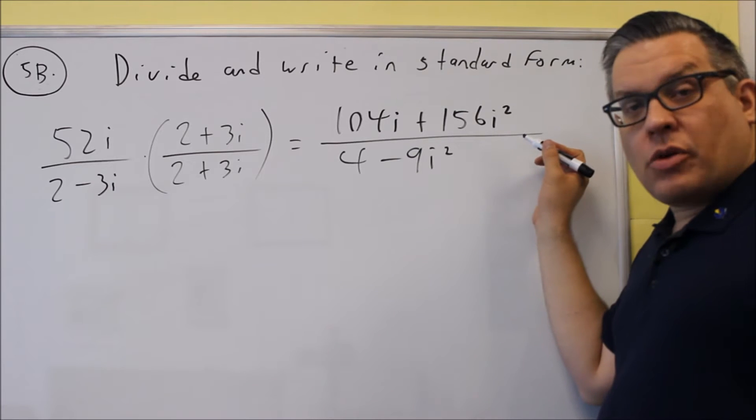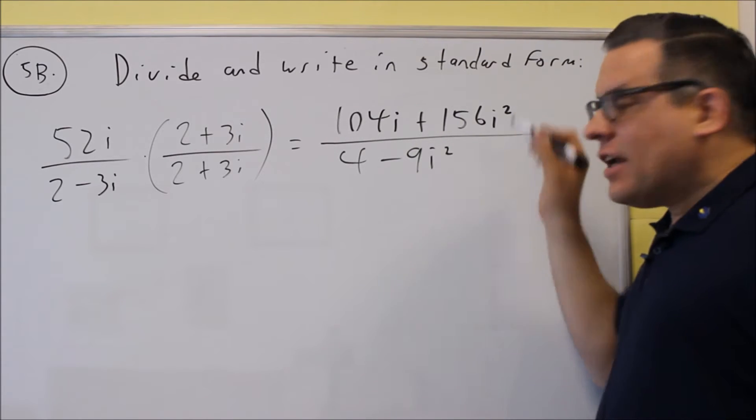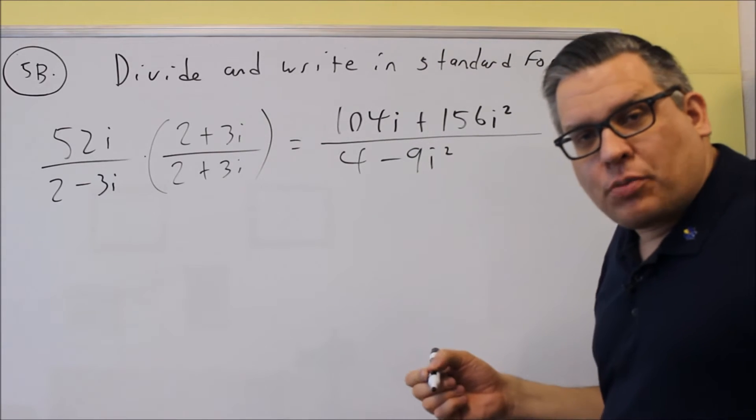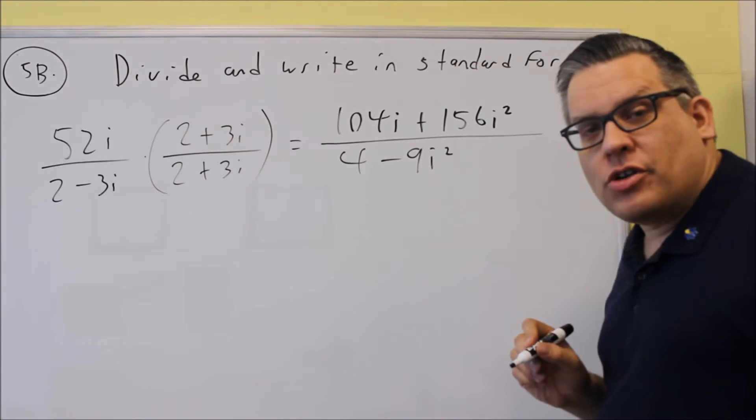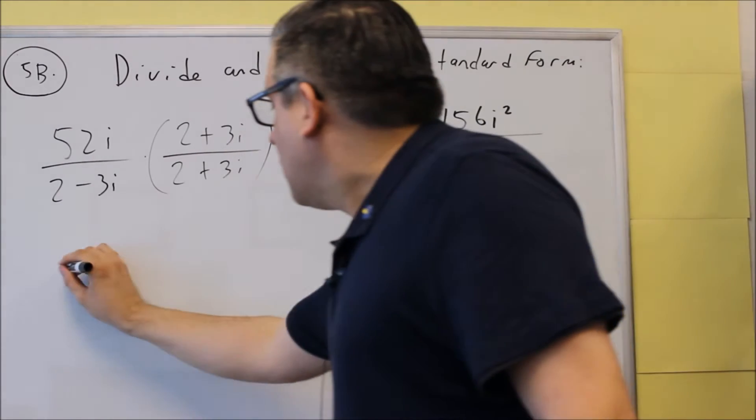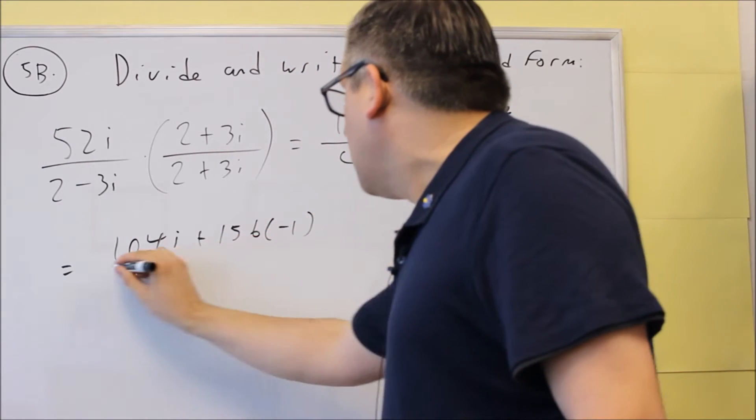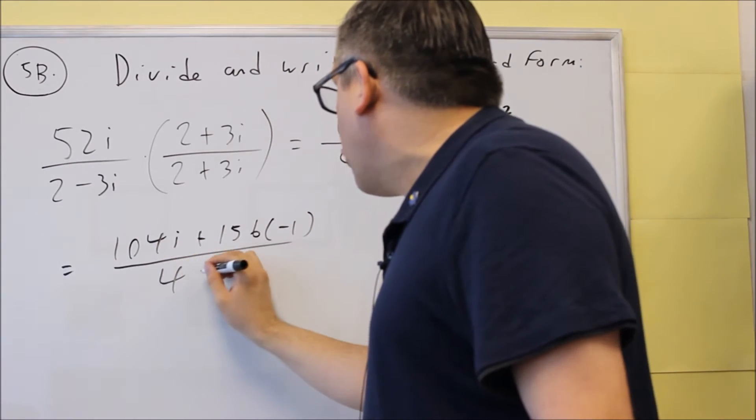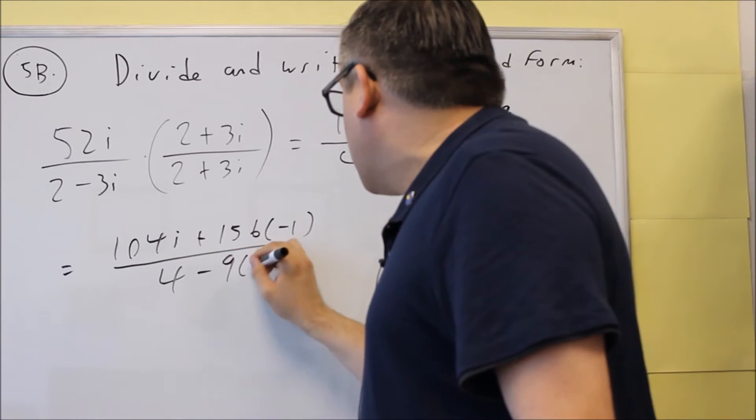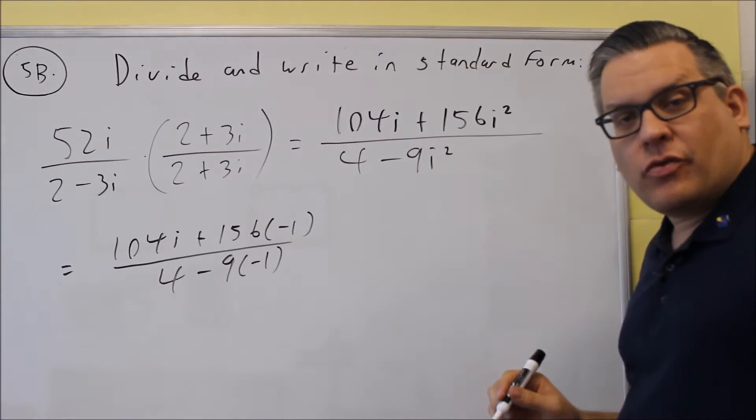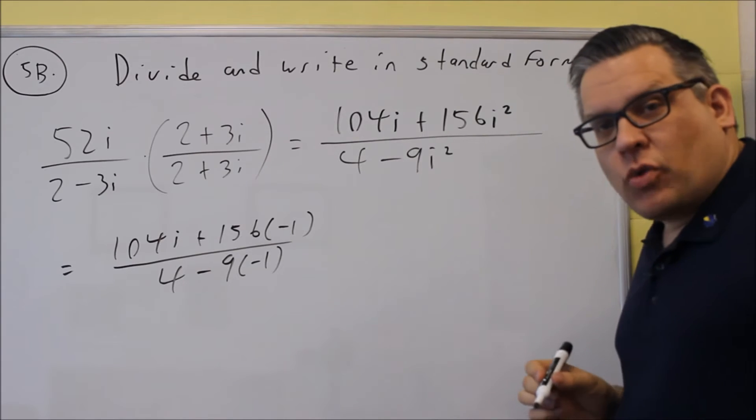So once you get done with that step, any i squares that you have, you always want to put negative 1 in for that, so that way you can reduce it more. So I've got on top 104i plus 156 times negative 1 and on the bottom I'm going to do 4 minus 9 times negative 1. So I put negative 1 in for both the i squares.